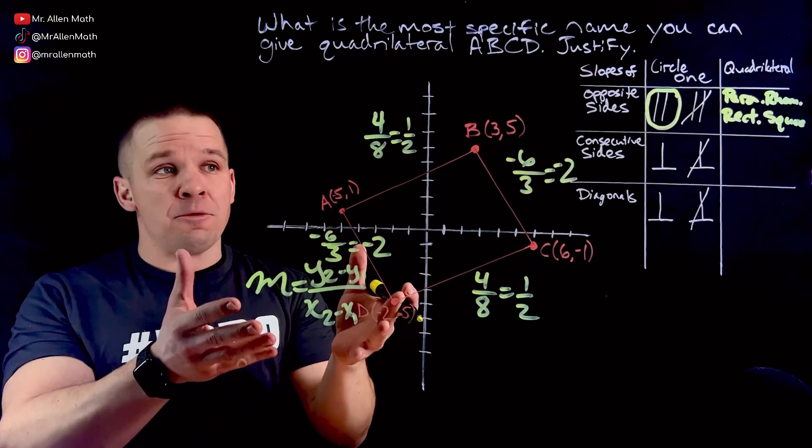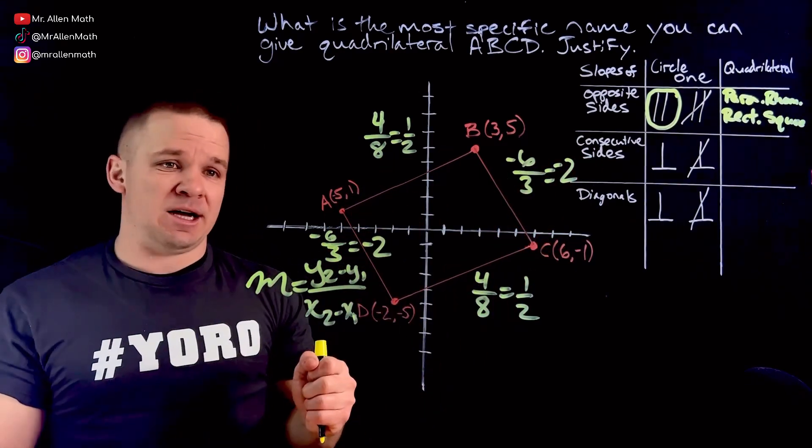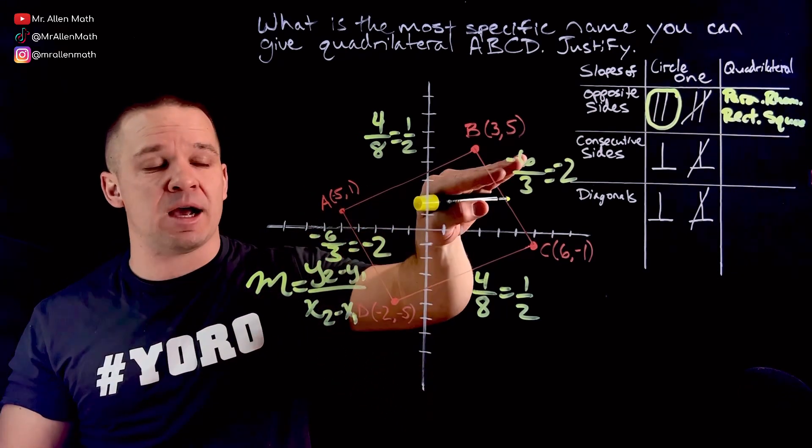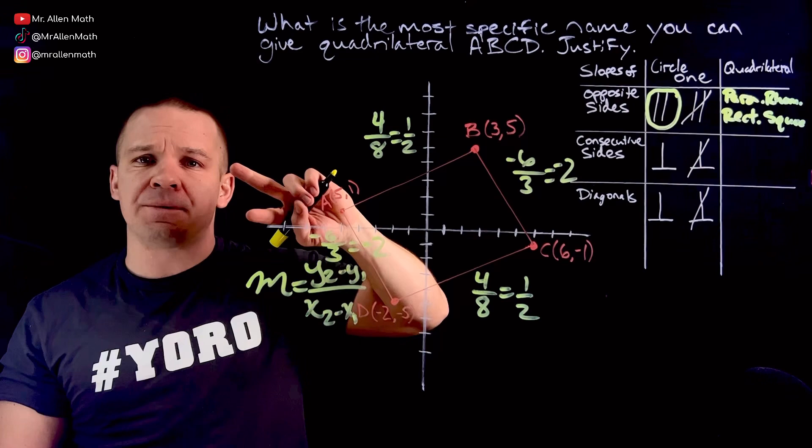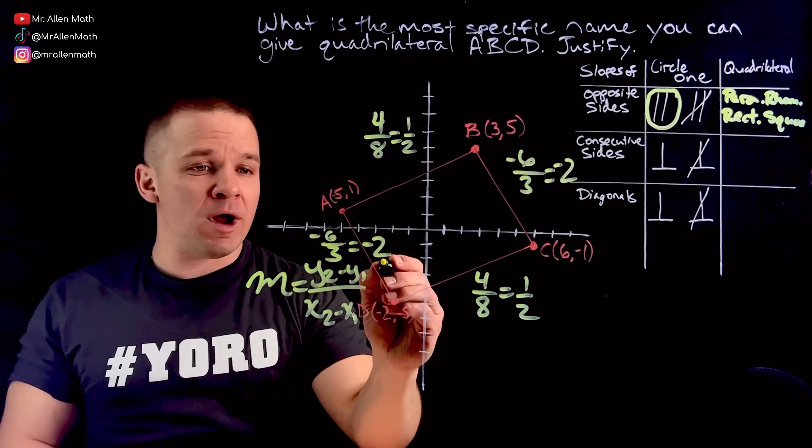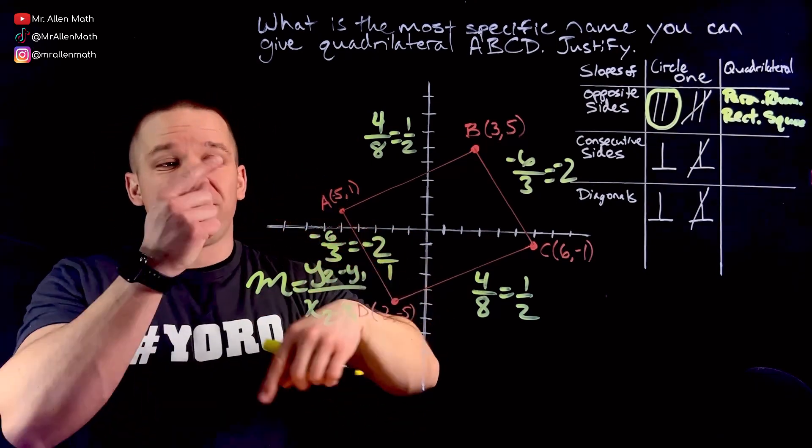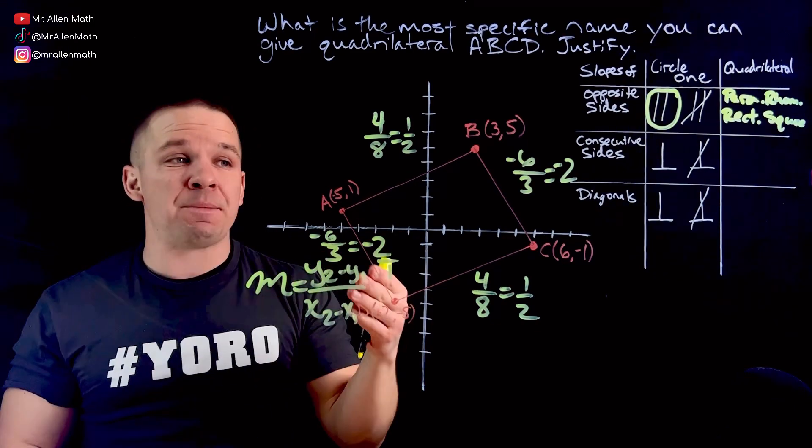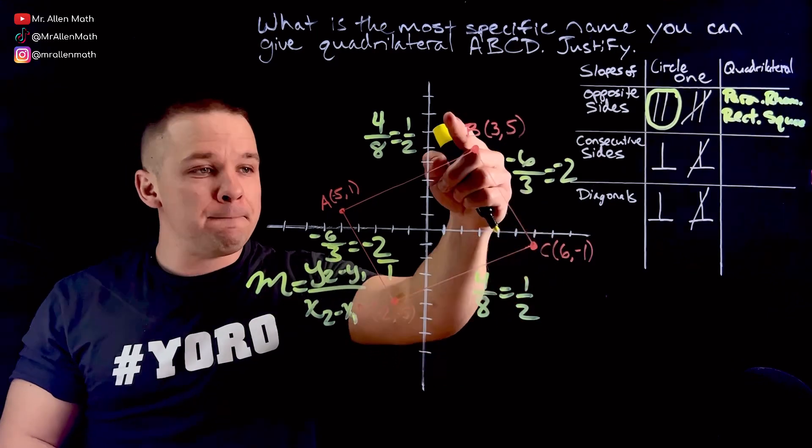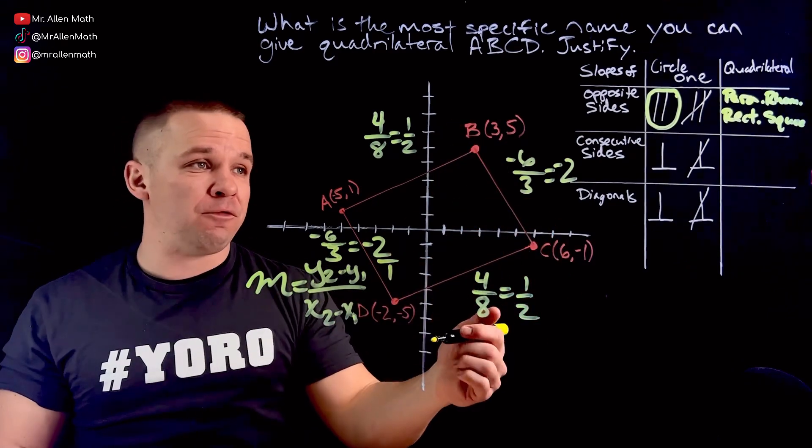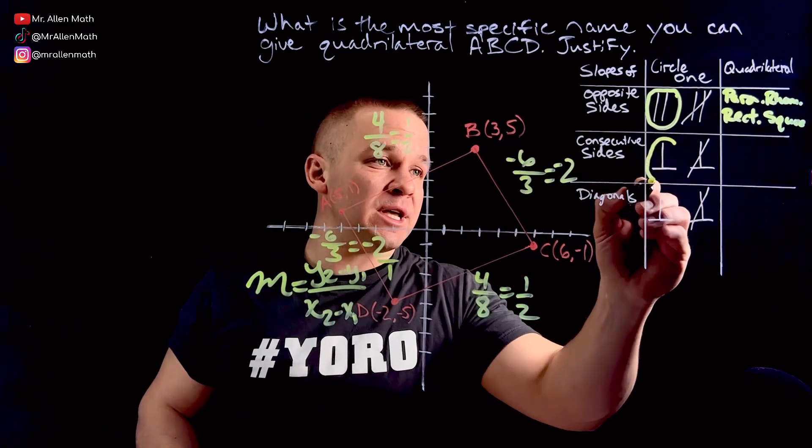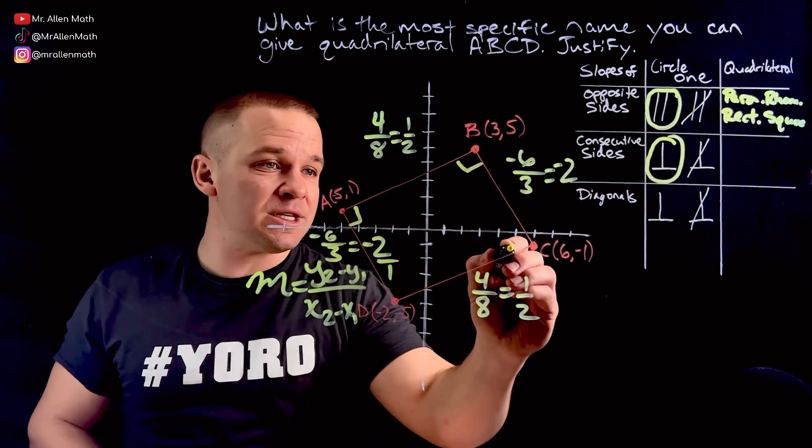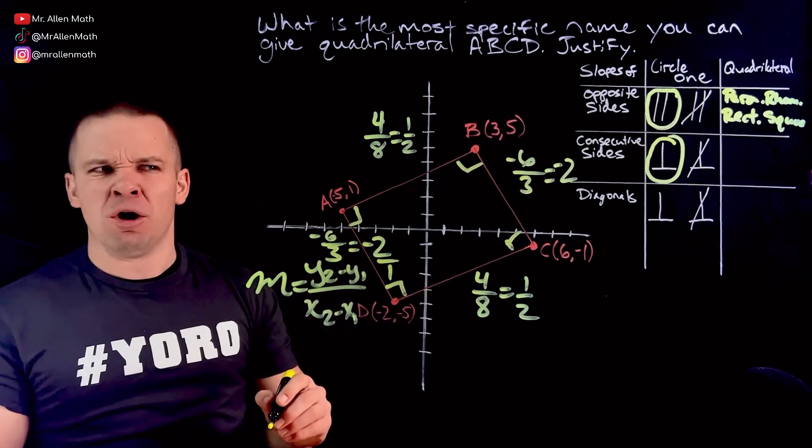Now we can still use these slopes here with the consecutive sides, the ones that are connected to each other. So this side here with that side there. Negative two and one half. Those are opposite reciprocals, because if I threw this over one, when I flip it, it becomes one half, change the sign, it becomes positive. If they are opposite reciprocals, and the same goes for AB and BC, BC and CD, so on and so forth. If they are opposite reciprocals, they are perpendicular. So this means that I have four right angles in this bad boy here. Four right angles.